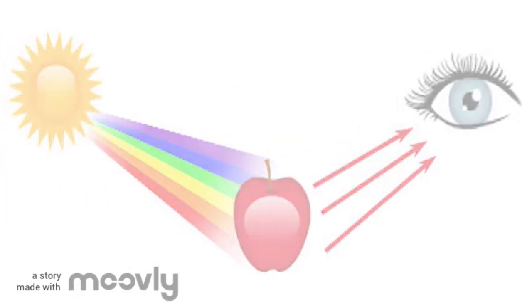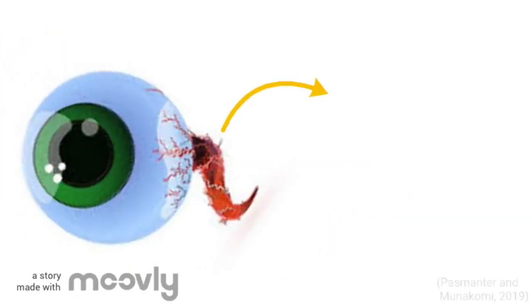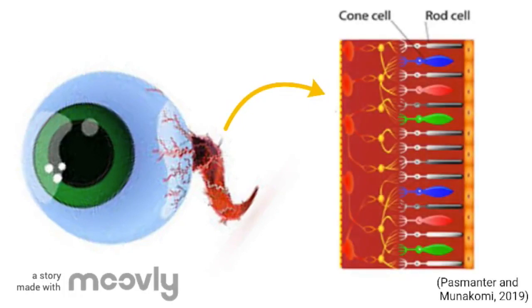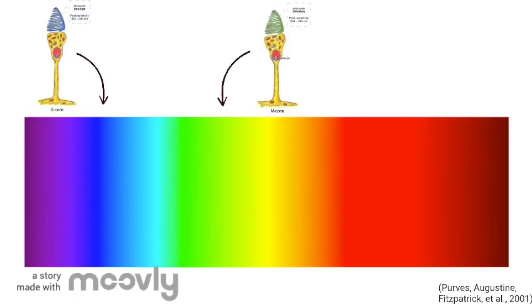How do we perceive color? Color vision works by using cells called cones that are located within the retina of the eye. Humans are trichromats, meaning they have three types of cones that are sensitive to different colors of light. The S cones are sensitive to blue light, the M cones are sensitive to green light, and the L cones are sensitive to red light.